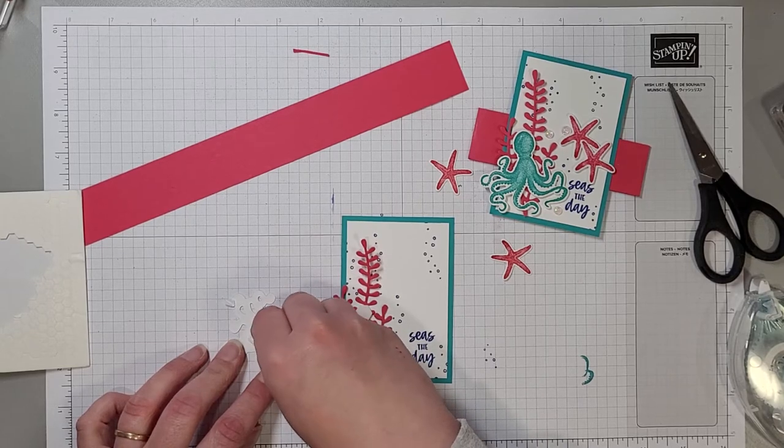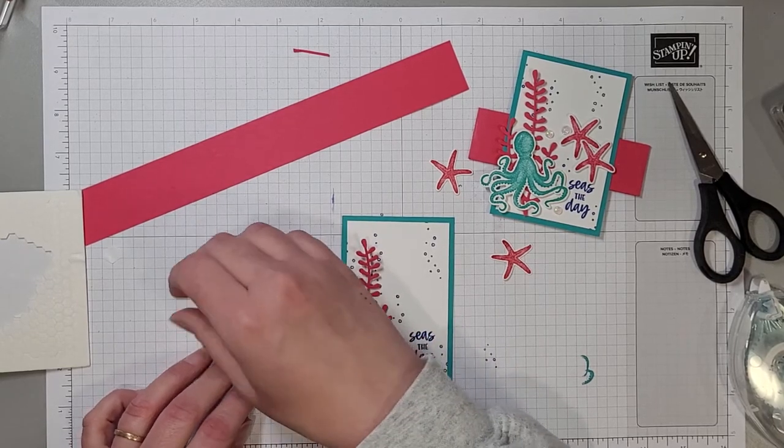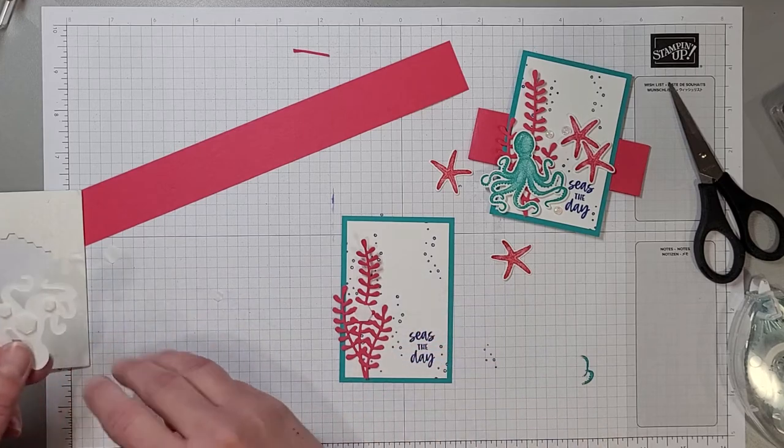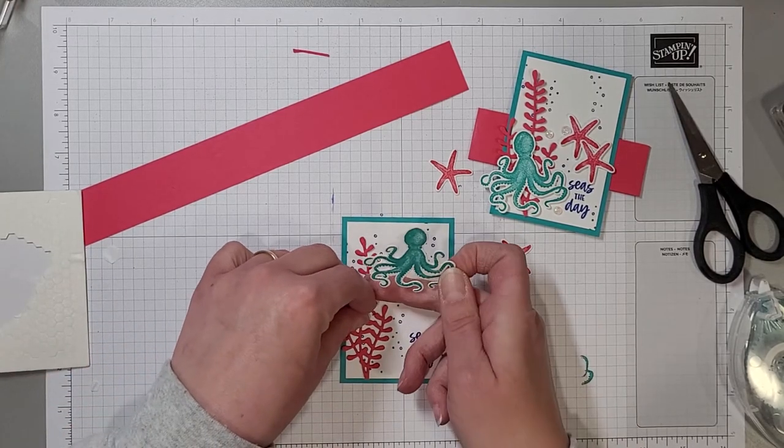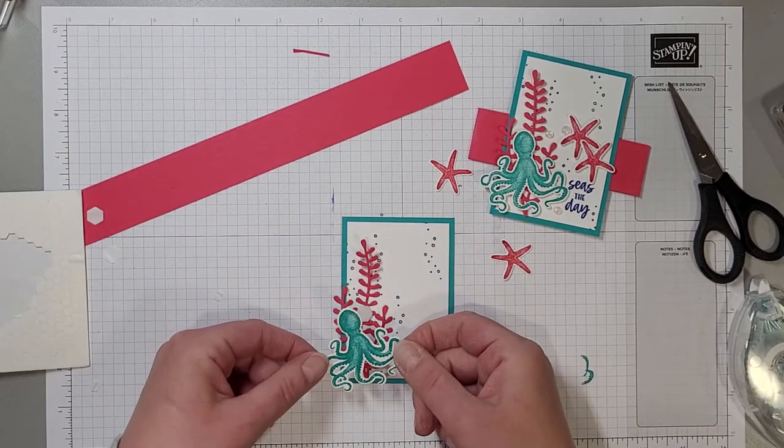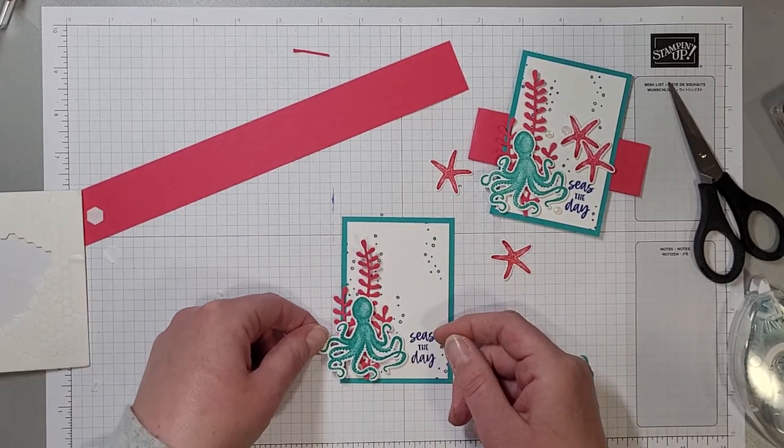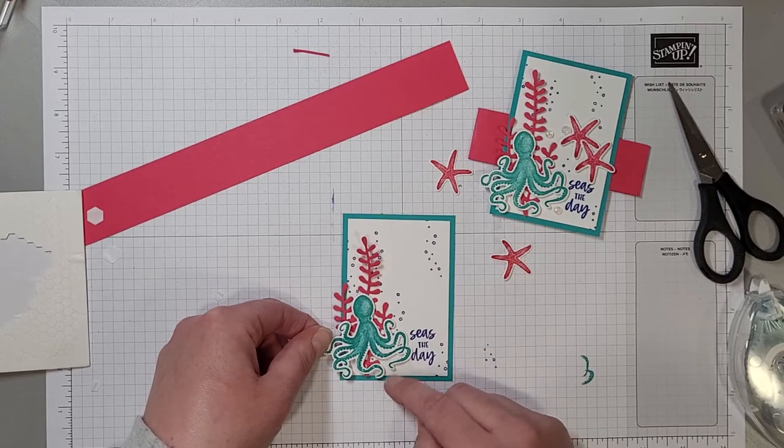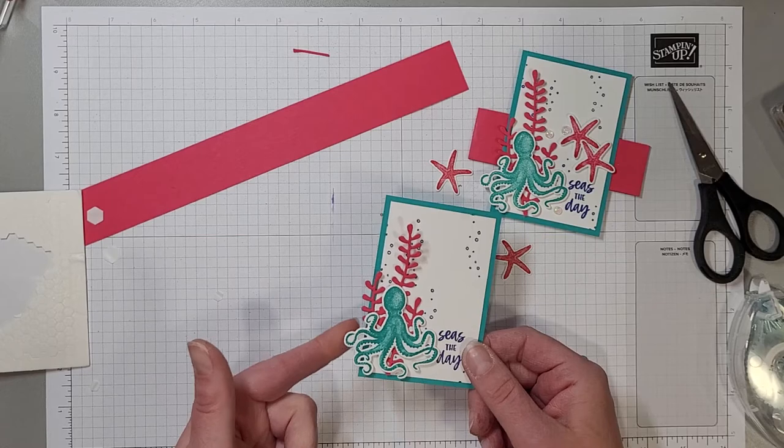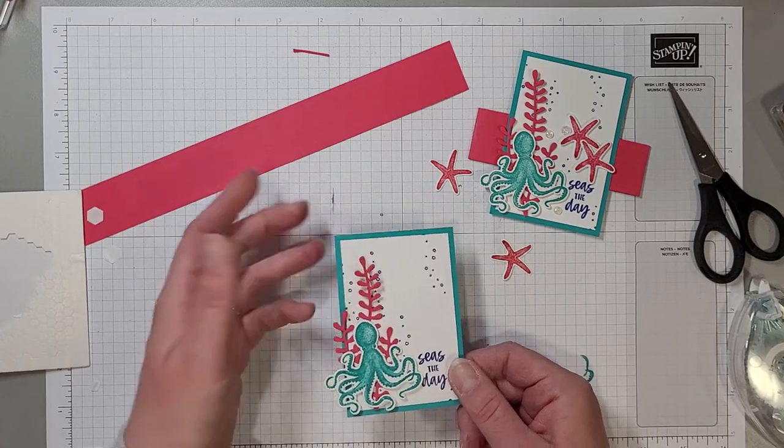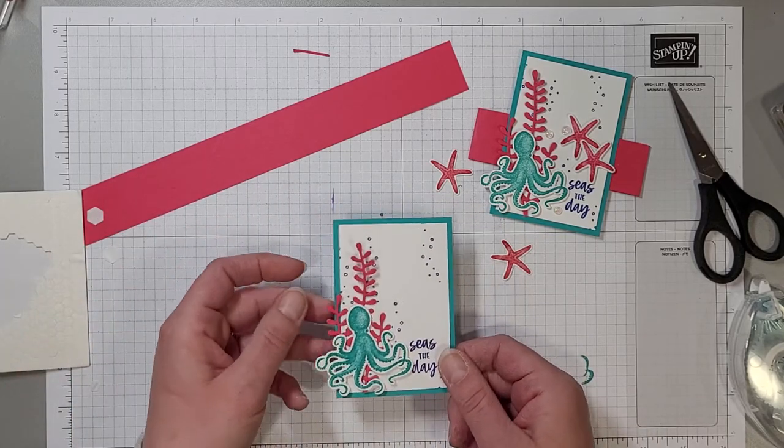So peel those backs off and these are also going to touch the foliage in some spots so they will hold it in place as well. I'm just being careful that I'm not going to cover my sentiment with my octopus here. I love that he's hanging off the edge again, it adds a little bit of extra feature and creativity to the card.